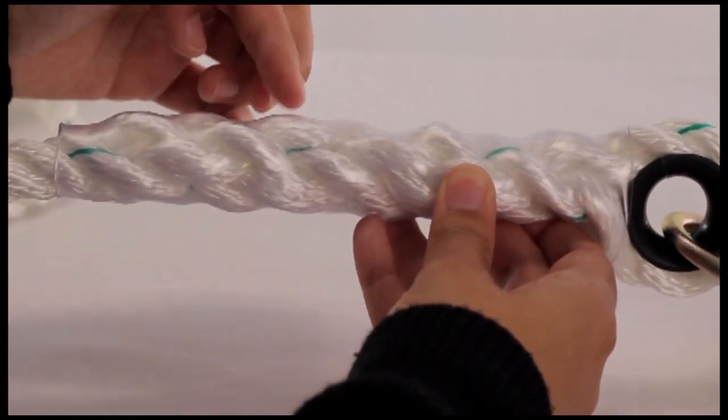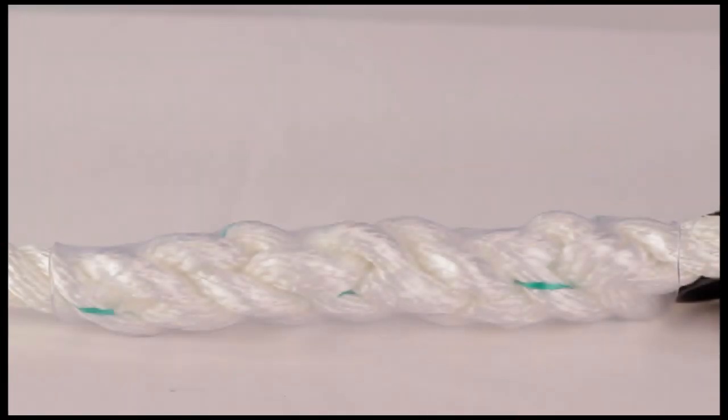If there are less than five tucks, do not use the rope. Tag and remove from service. Record the inspection date and findings in the inspection log.